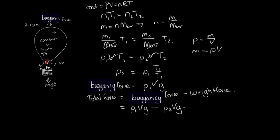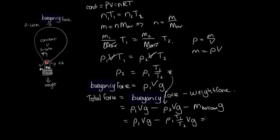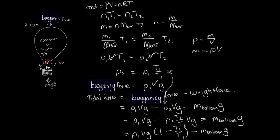We also have the mass of the balloon, basket, envelope, gas cylinders, etc., which gives a weight of M_balloon × g. So the total force is: ρ₁Vg − ρ₂Vg − M_balloon × g. Substituting ρ₂ = ρ₁T₁/T₂, this becomes: ρ₁Vg × (1 − T₁/T₂) − M_balloon × g. This is the total force acting on the balloon. If this is positive, the balloon accelerates upwards; if negative, because the weight force is larger, the balloon accelerates downwards.